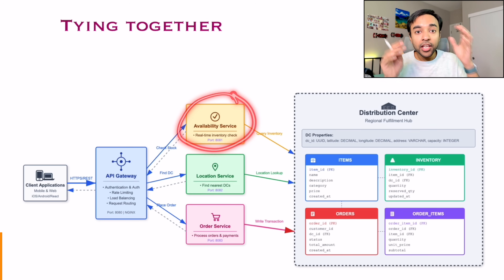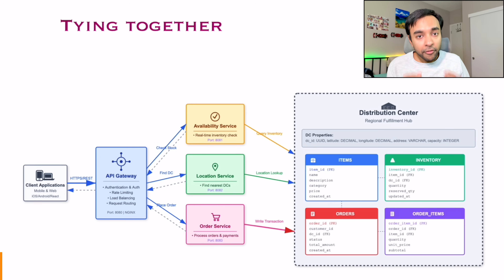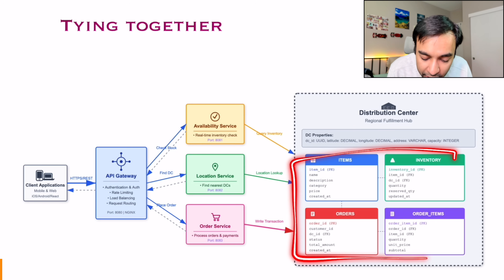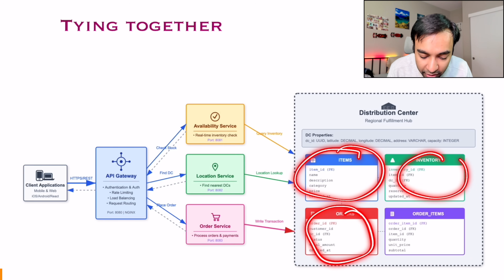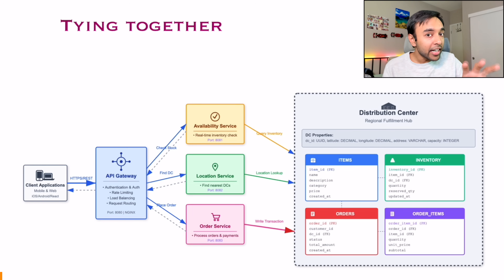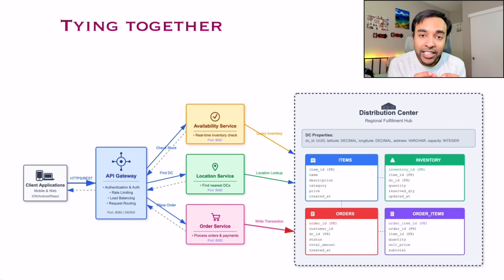As soon as you determine these are the closest distribution centers, you want to determine if your items are even available. You do a join query and determine these are the items available. Then it is time to actually create your order. When you create this order, you make a lock on your database and perform a transaction. You have different tables for items, orders, inventory and order items. Notice that all of these distribution centers can maintain their own databases — that is how you can scale your system, and each distribution center can have its own database with ACID properties to always stay consistent. Your order is completed, a notification is sent to the distribution center, and a human being will pick up your order and go to deliver it.